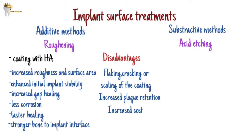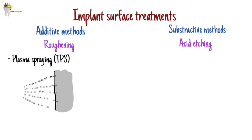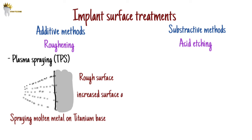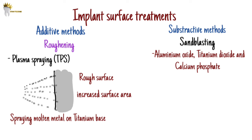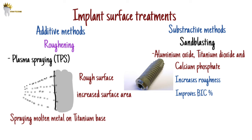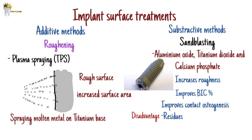Titanium plasma sprayed surface (TPS) is prepared by spraying molten metal on the titanium base, resulting in a surface with irregularly sized and shaped valleys, pores, and crevices. This increases the microscopic surface area by approximately 10 times. Sandblasting is done using agents such as aluminum oxide, titanium dioxide, and calcium phosphate to increase surface roughness. Sandblasting not only improves bone-to-implant contact percentage but also improves contact osteogenesis by allowing the addition, proliferation, and differentiation of osteoblasts over the implant surface. The disadvantage is that there could be residues of sandblasting materials, and it could be non-uniform and result in loss of metallic substance from the implant.